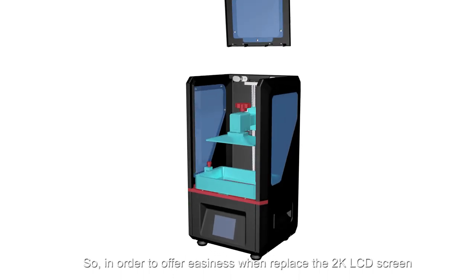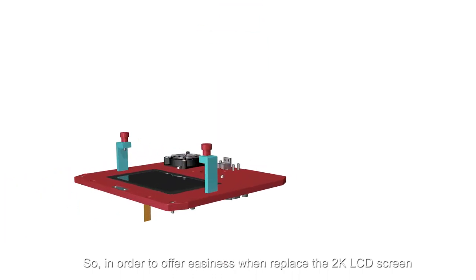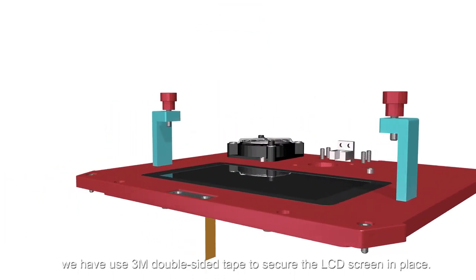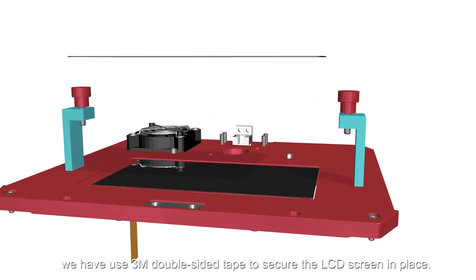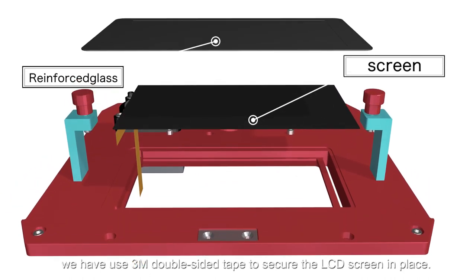So, in order to offer easiness when replacing the 2K LCD screen, we have used 3M double-sided tape to secure the LCD screen in place.